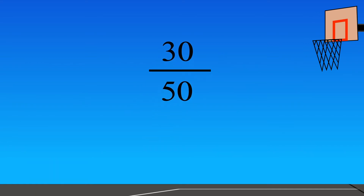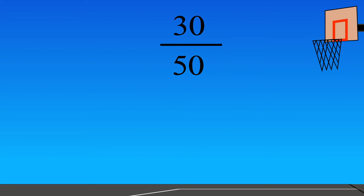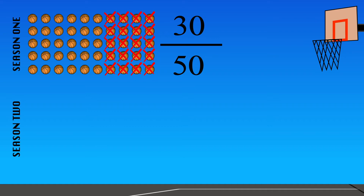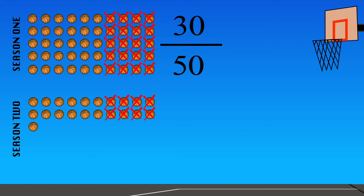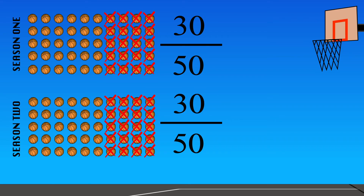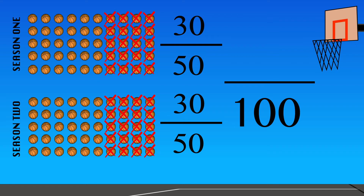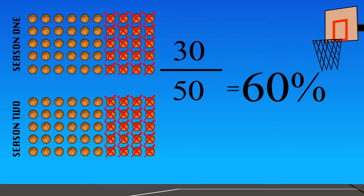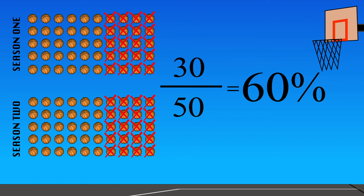Let's imagine the player continues to get 30 out of 50 every basketball season. After two seasons, the player would have made 100 free throw attempts and made 60 of them. So that's 60 out of 100, which is 60%. If a player makes 30 out of 50 baskets, we say they made 60% of their shots.